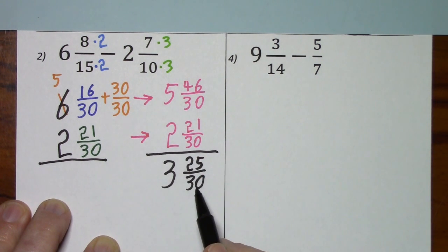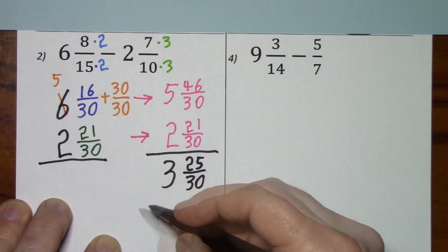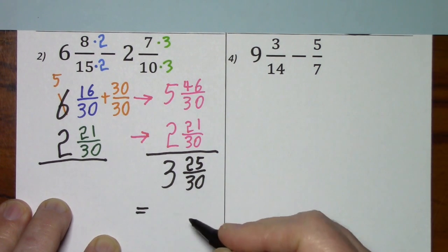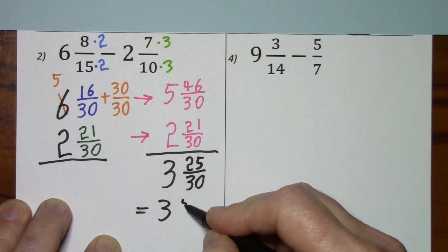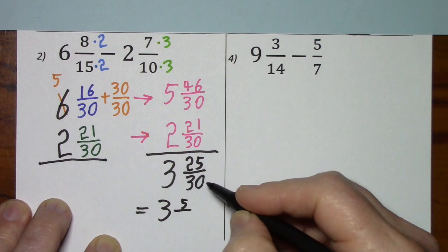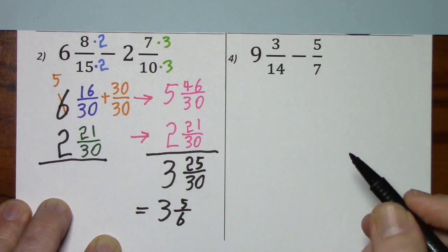But you can't leave it in this form because 25 thirtieths has a common factor of 5. So, this is equal to 3. Divide by 5 leaves you with 5. Divide by 5 leaves you with 6. So the answer is 3 and 5 sixths.